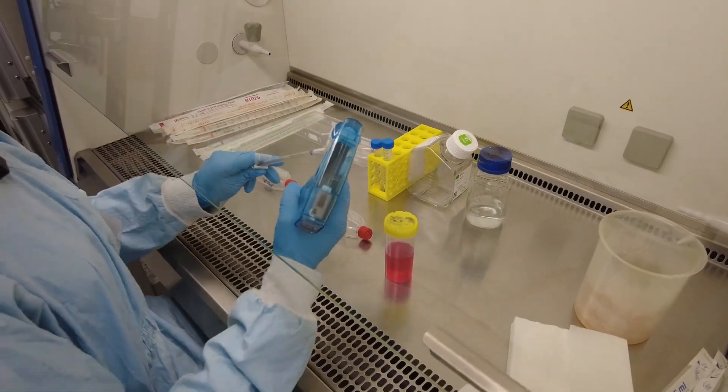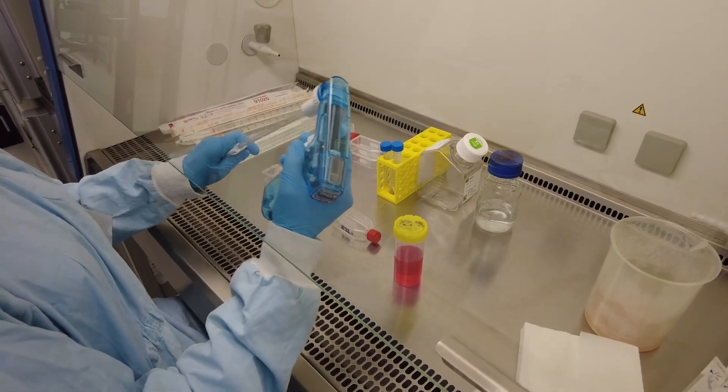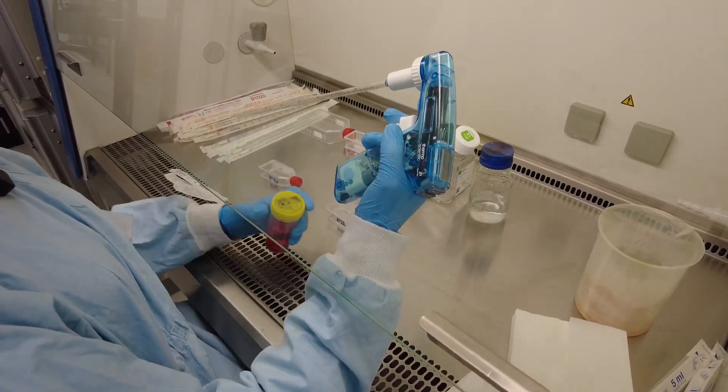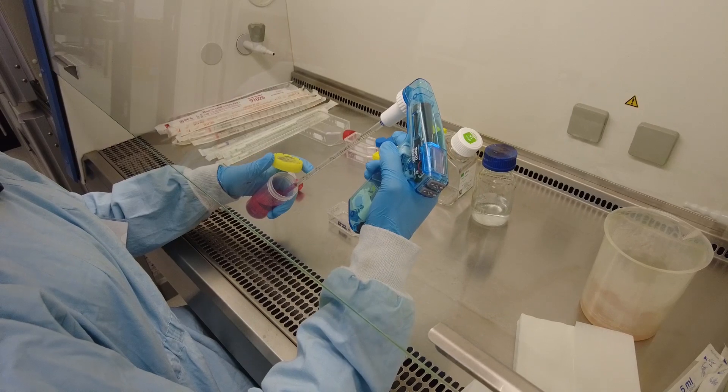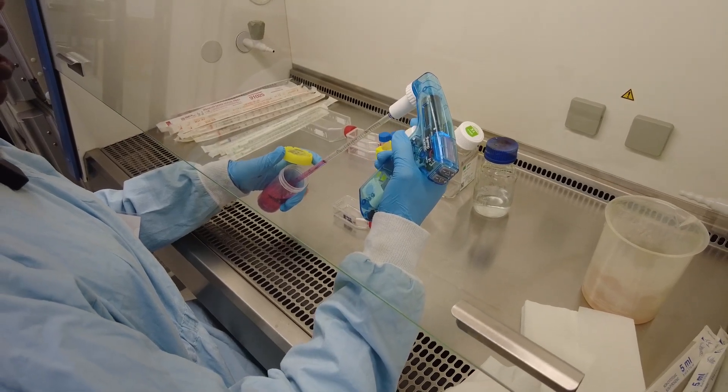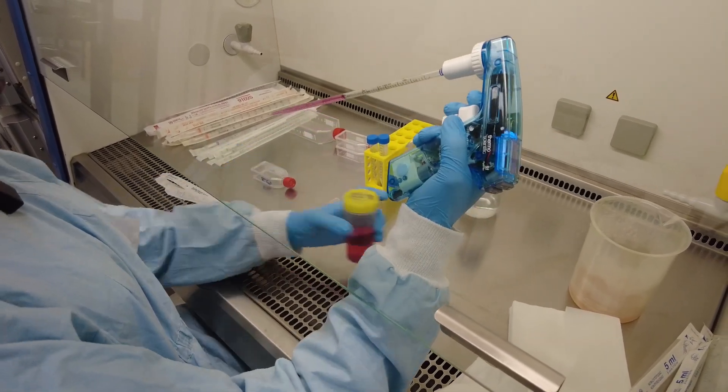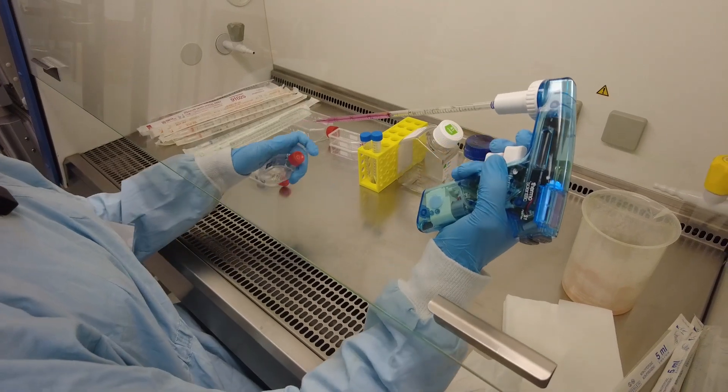So now we're going to add media to neutralize the reaction of lifting of the cells with trypsin. We're going to add two ml into each flask, same volume as trypsin that we added. This will neutralize the reaction.